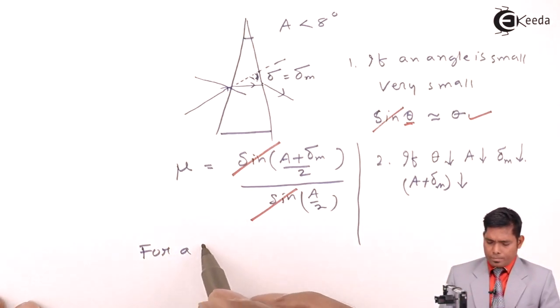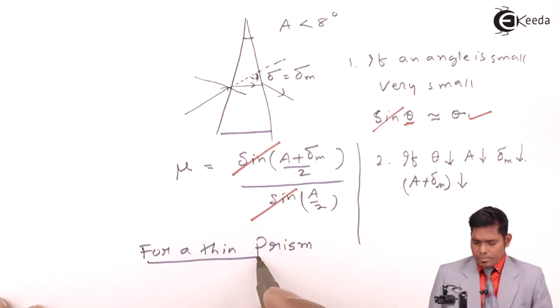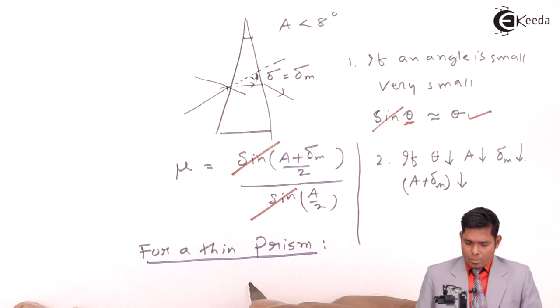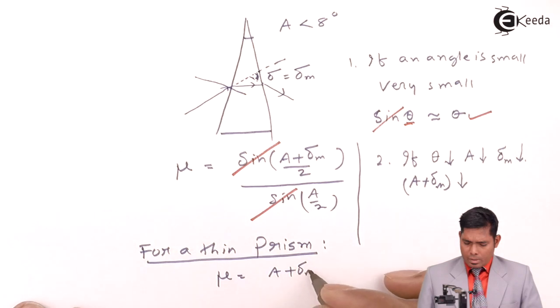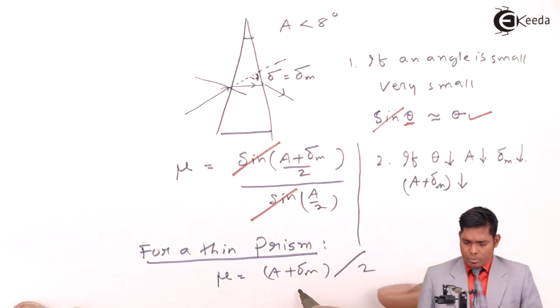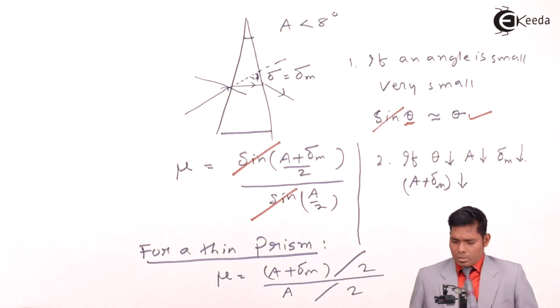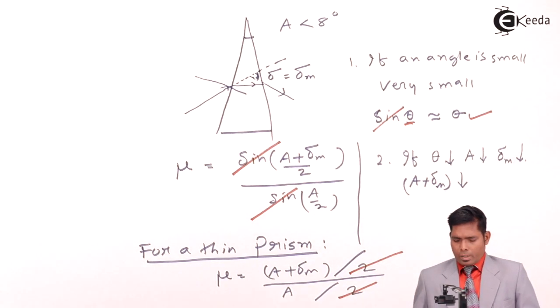For a thin prism, we have mu equals (A plus delta m) divided by A. This 2 will also cancel out. And we have left with...